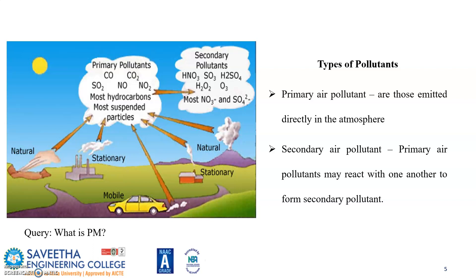One of the types of pollutants responsible for air pollution: number one, primary air pollutants, and number two, secondary air pollutants. Primary air pollutants are directly emitted into the atmosphere. Secondary air pollutants form when primary pollutants react with one another to form another pollutant — that is called a secondary pollutant.